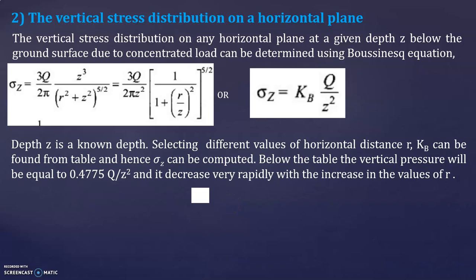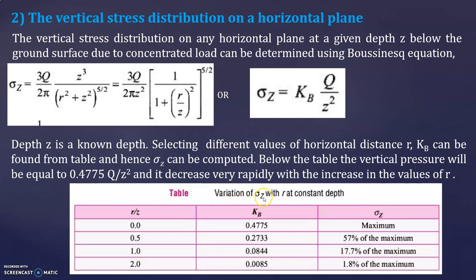Below the load, the vertical pressure equals 0.4775q divided by z squared, and it decreases very rapidly with increase in the values of r. This is the table which shows the variation of vertical stress with horizontal distance r at constant depth. For r/z ratio equal to 0, kb equals 0.4775, which gives the maximum sigma z value.